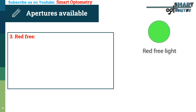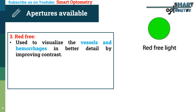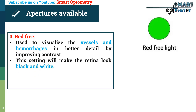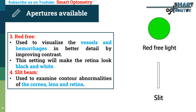3. Red-free circle: it is used to visualize vessels and hemorrhages in better detail by improving contrast. This setting will make the retina look black and white. 4. Slit beam: it is used to examine contour abnormalities of the cornea, lens, and retina.